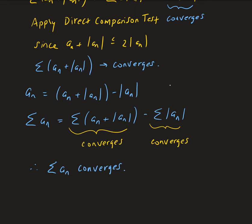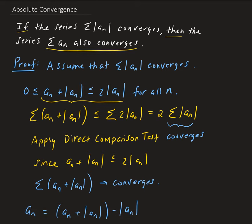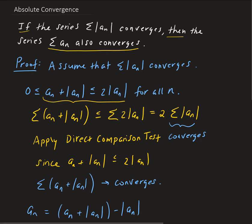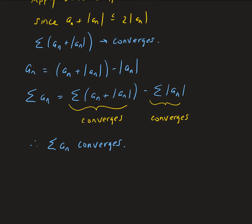And that's what we wanted to show. So if the absolute value of the series converges, then the corresponding series for that also converges. This is a very nice theorem, and you can use it as one of the tests to determine whether a series converges or not.